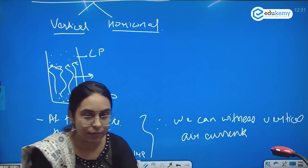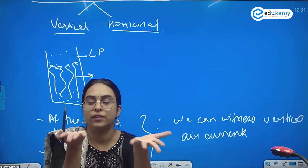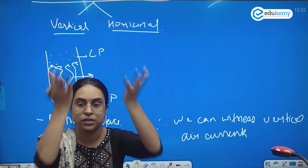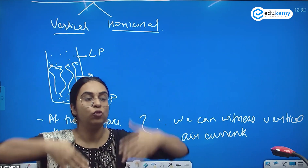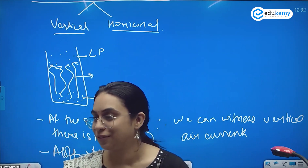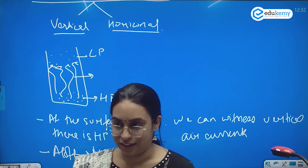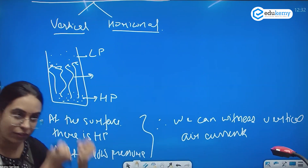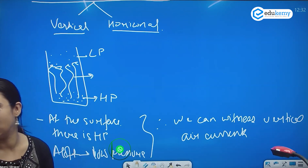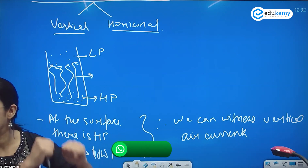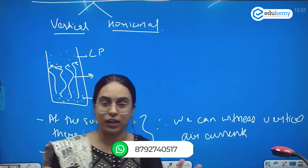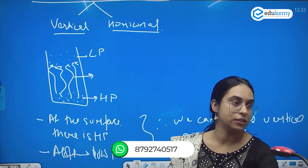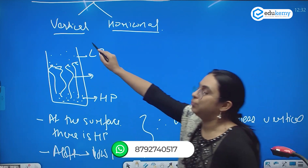If there is high pressure on the surface, low pressure aloft, and vertical air currents exist, why don't we fly up? Because gravity is holding us on the surface of the earth. There are vertical air currents, but gravity holds us on the earth's surface.